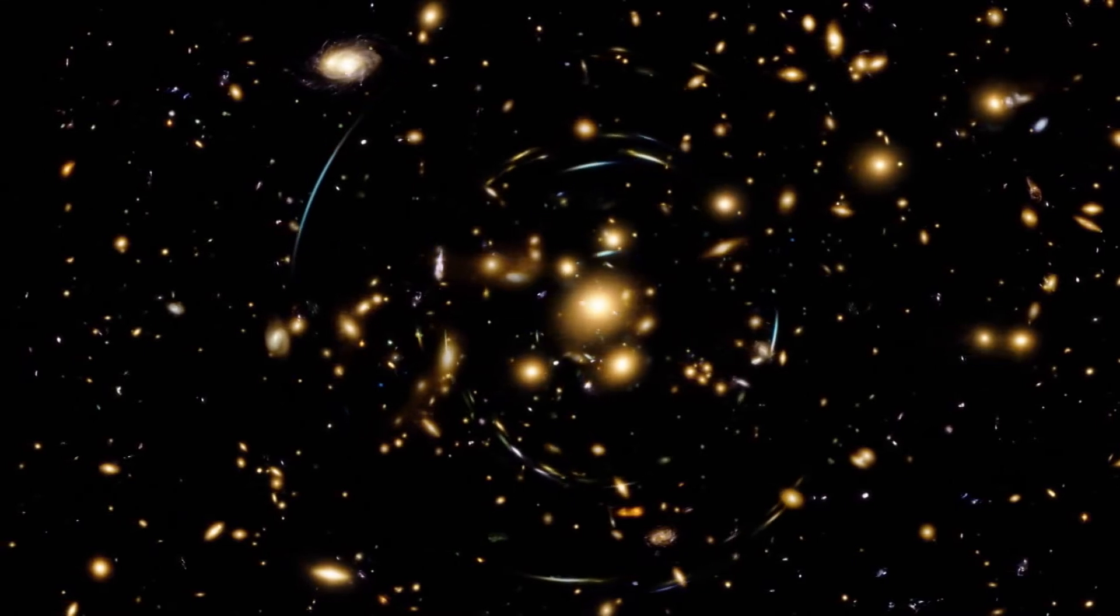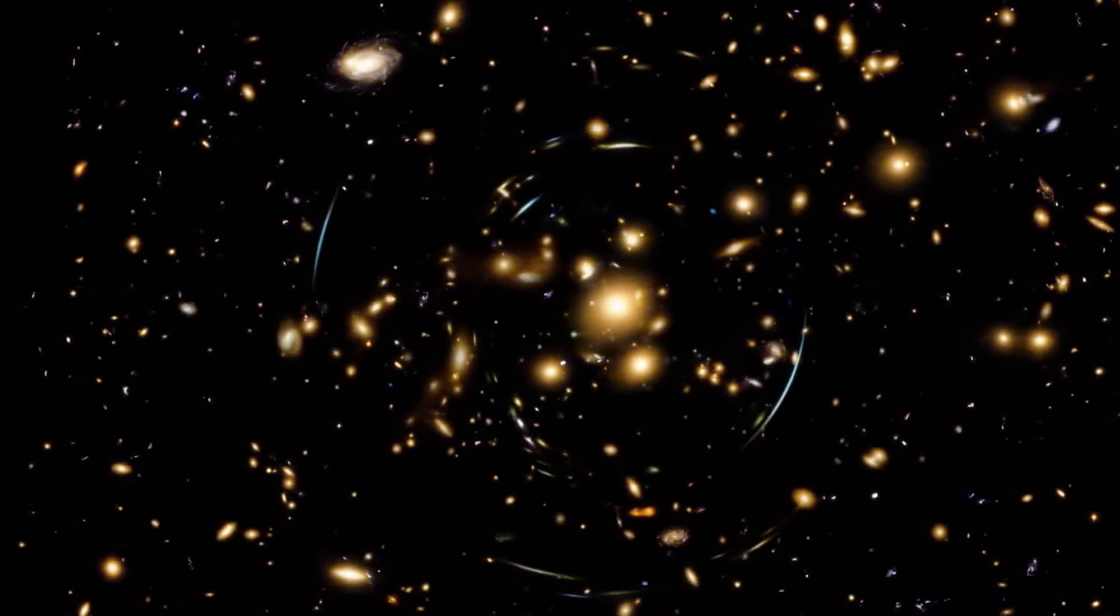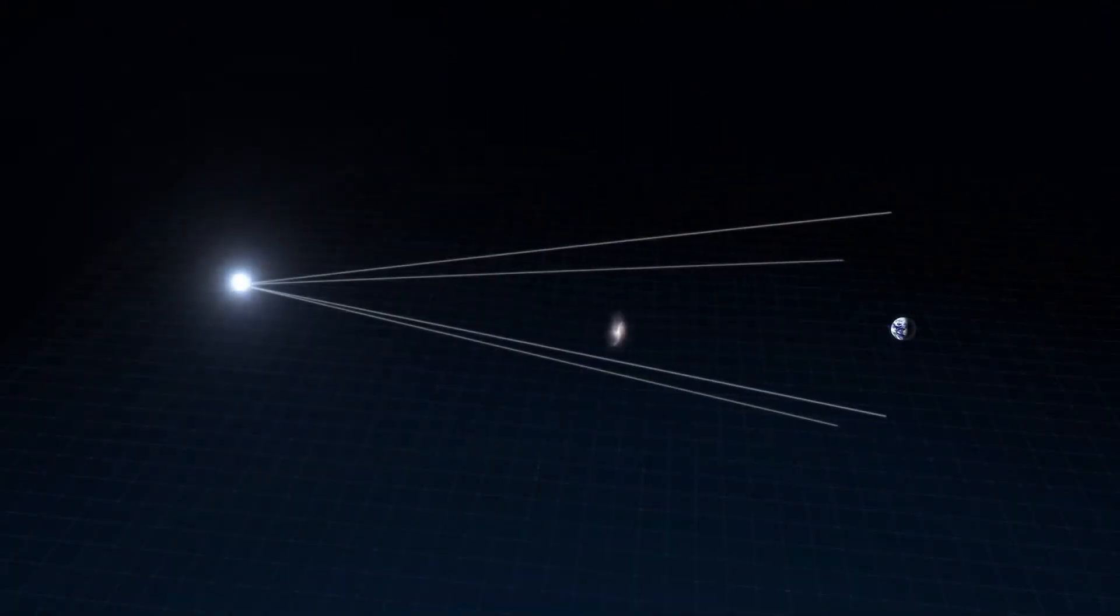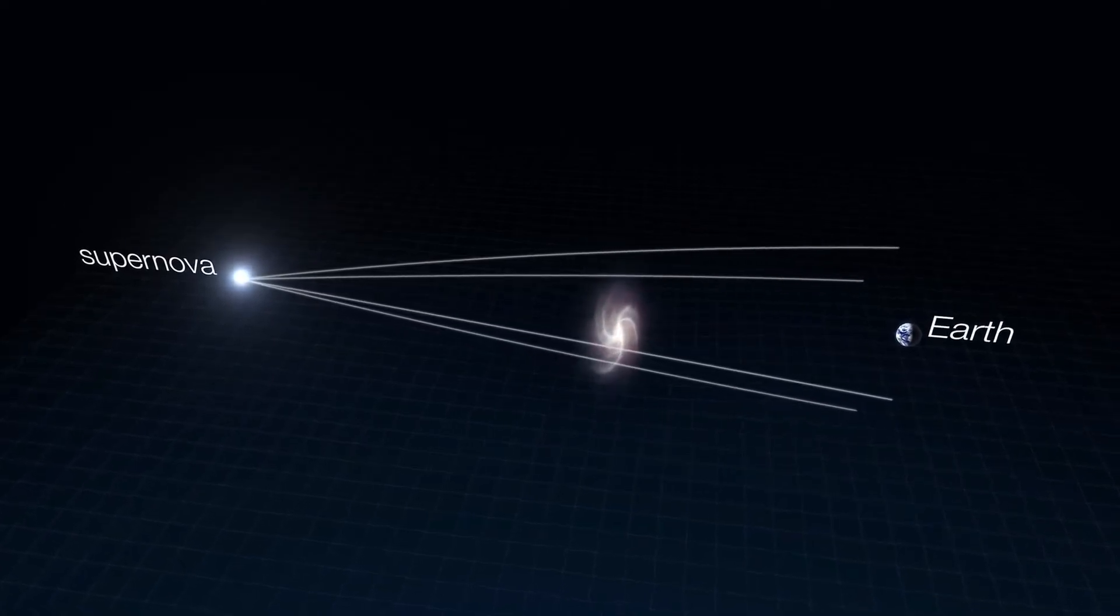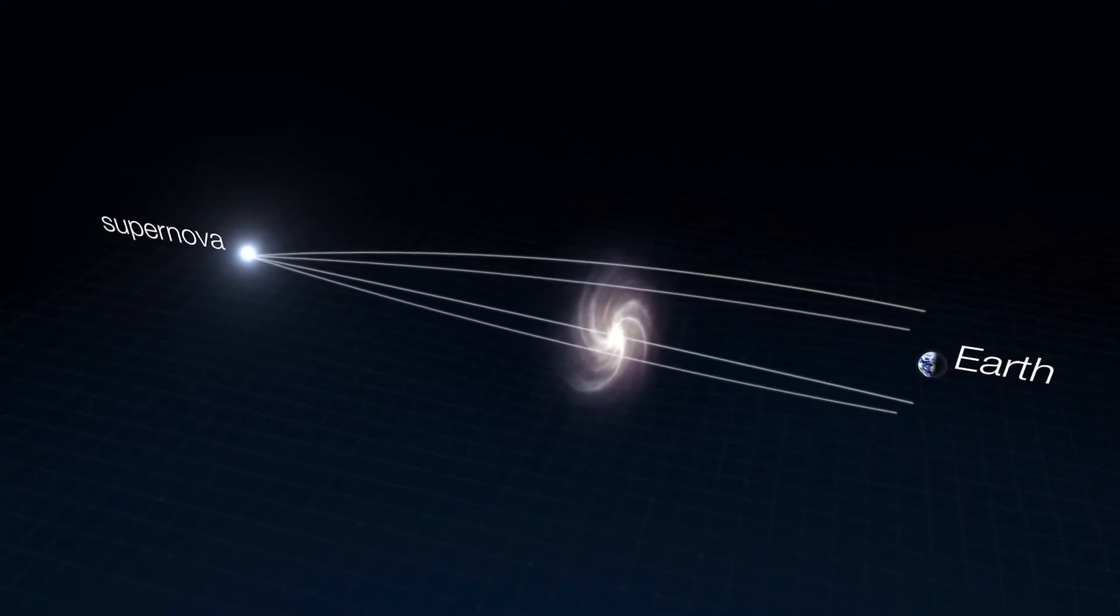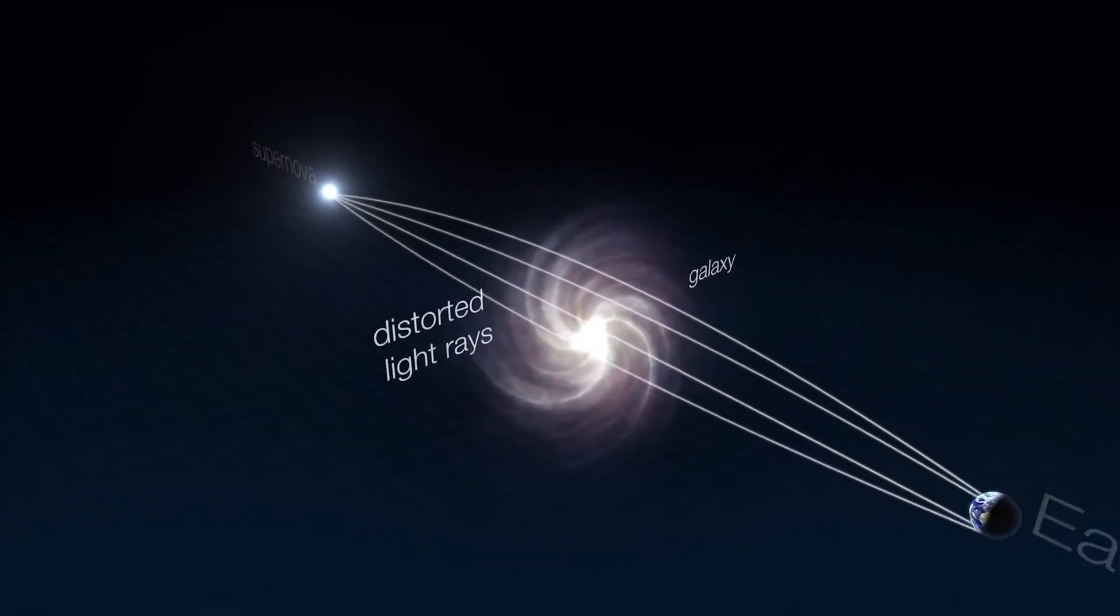Gravitational lensing is a phenomenon created by extremely concentrated masses, like the cores of galaxies or galaxy clusters. Their strong gravity warps the surrounding space.